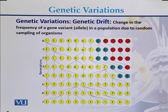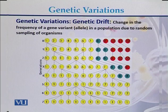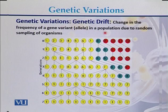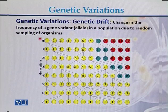The fourth cause of genetic variation is genetic drift. Genetic drift is a change in the frequency of a gene variant in a population due to random sampling of organisms.